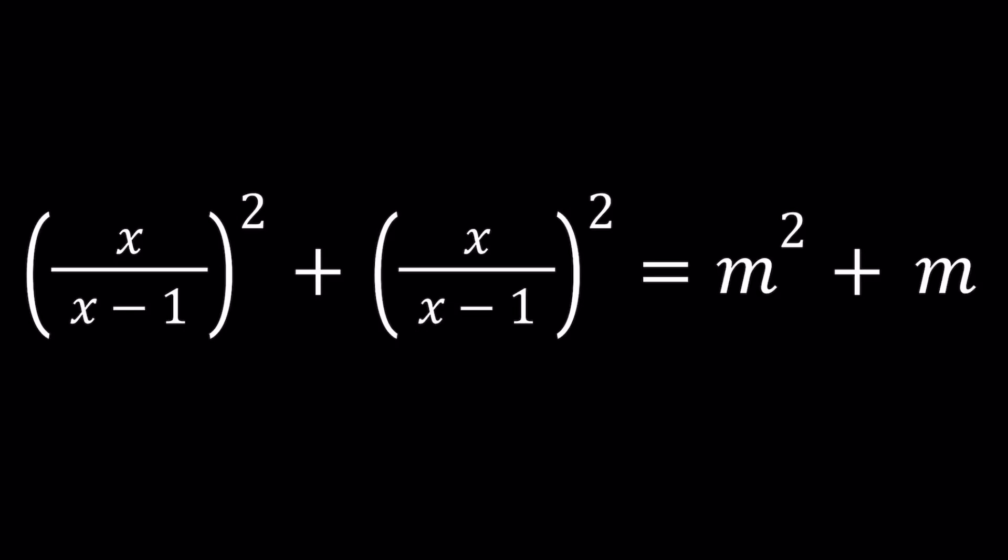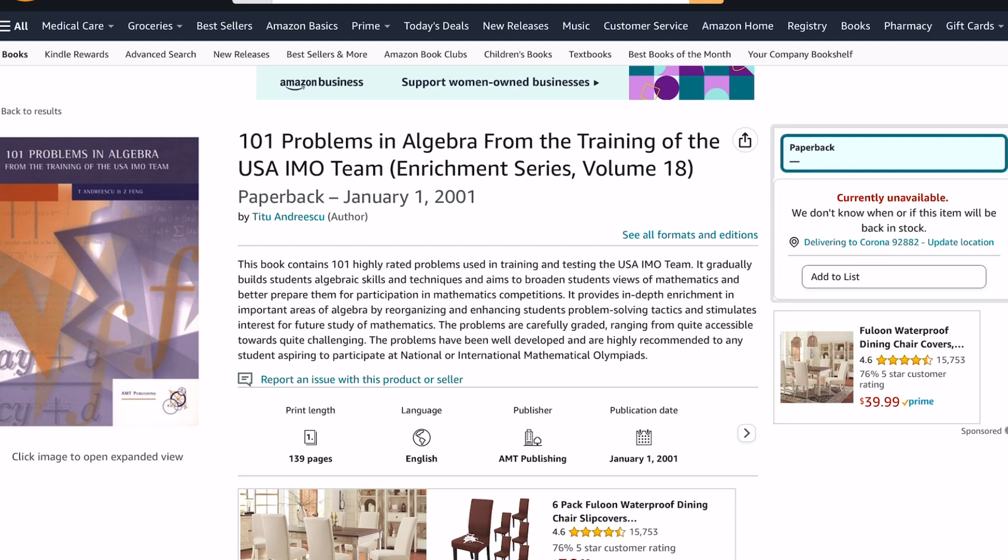Hello everyone. In this video we're going to be solving a very nice problem from a book called 101 Problems in Algebra. Here's what the book looks like. Unfortunately currently it's unavailable on Amazon. I'm pretty sure you can find it from other sources if you live in the United States, or maybe a used copy. This is a really nice problem that has been used for the training of the USA IMO team.